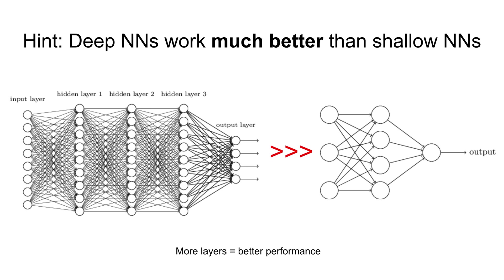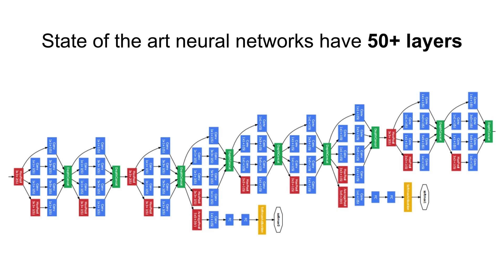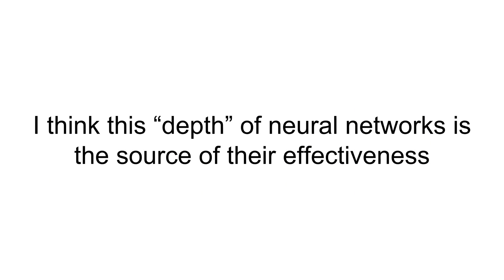One of the biggest hints about understanding deep neural networks is to see that they work much much better than shallow neural networks. It's generally known in academia and industry that to get better performance you throw in more layers in a neural network, and state-of-the-art neural networks really do have many layers — 50, and I've even seen models that have 150 layers.